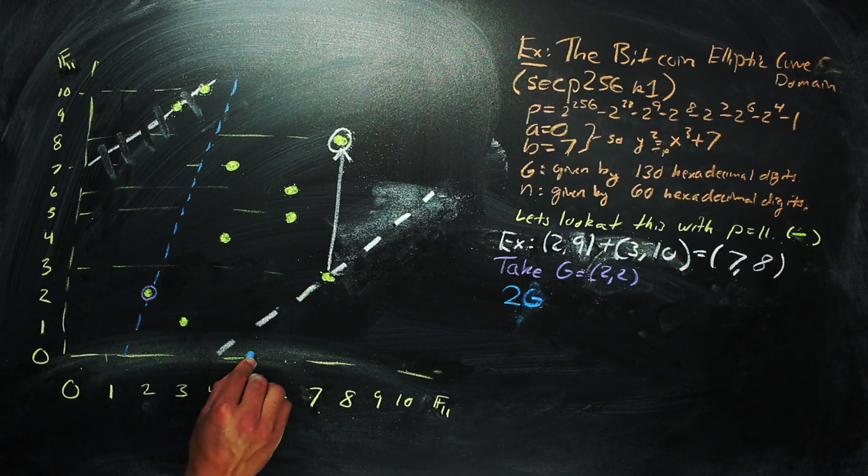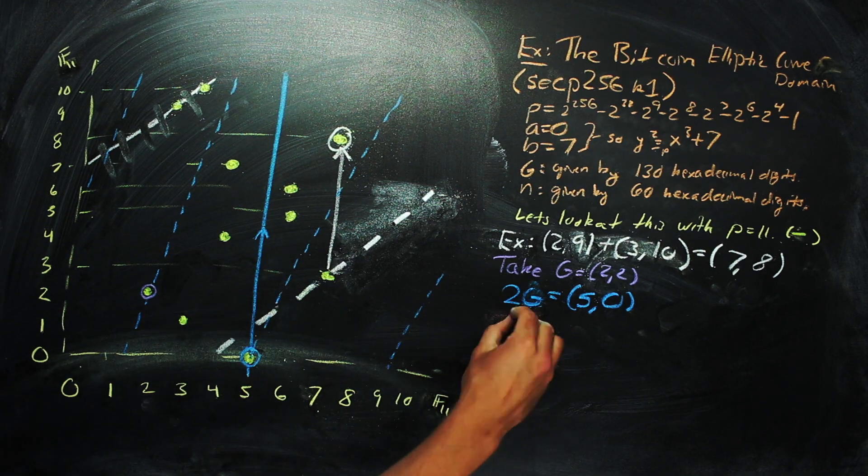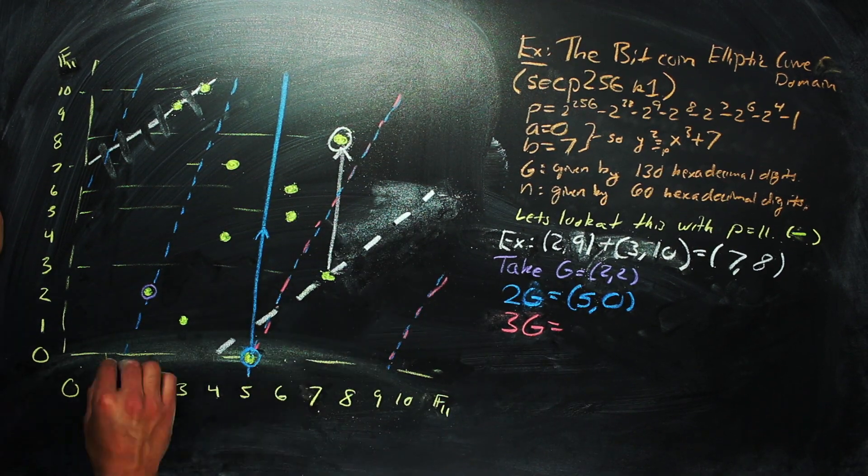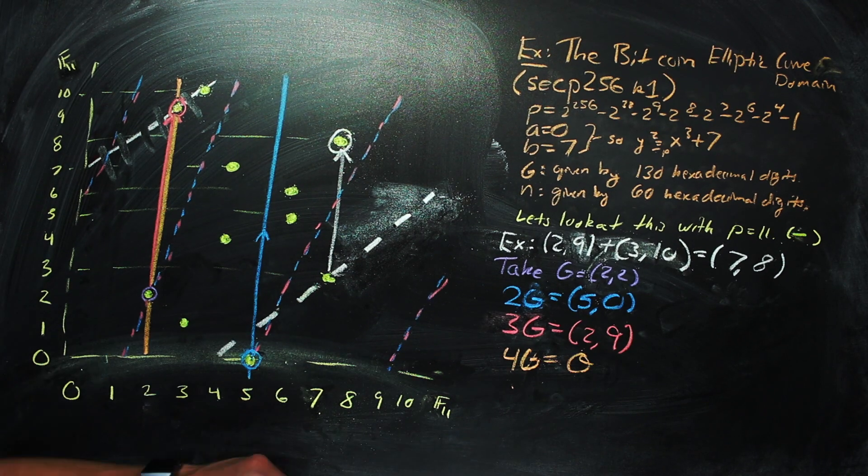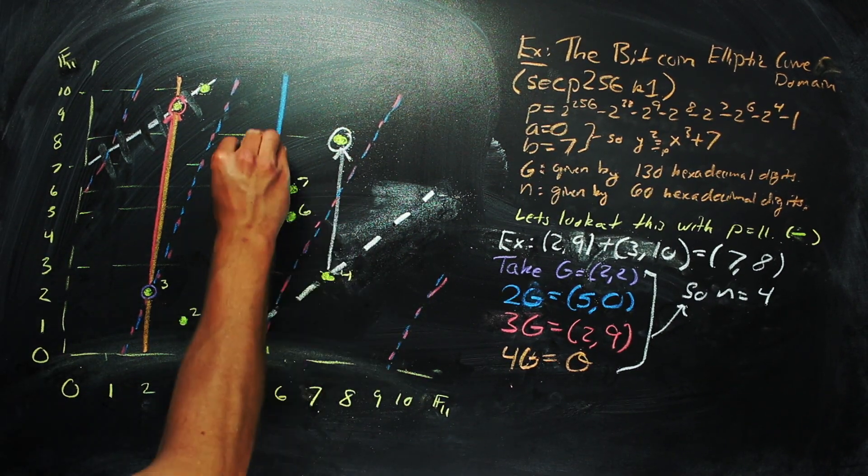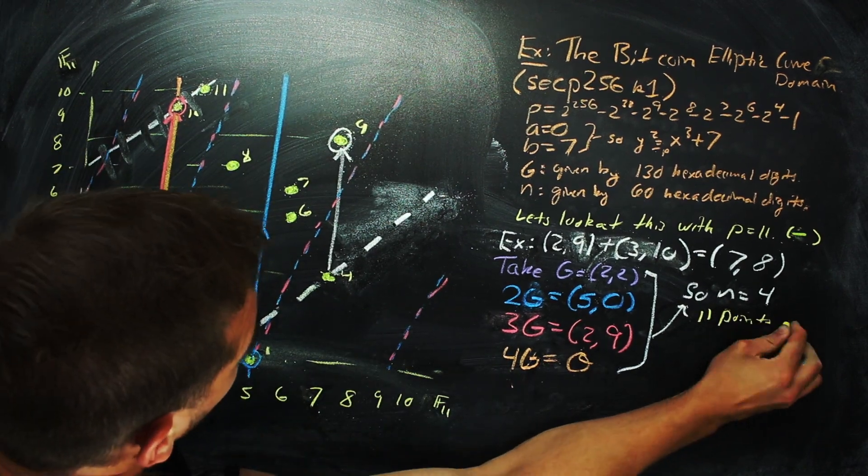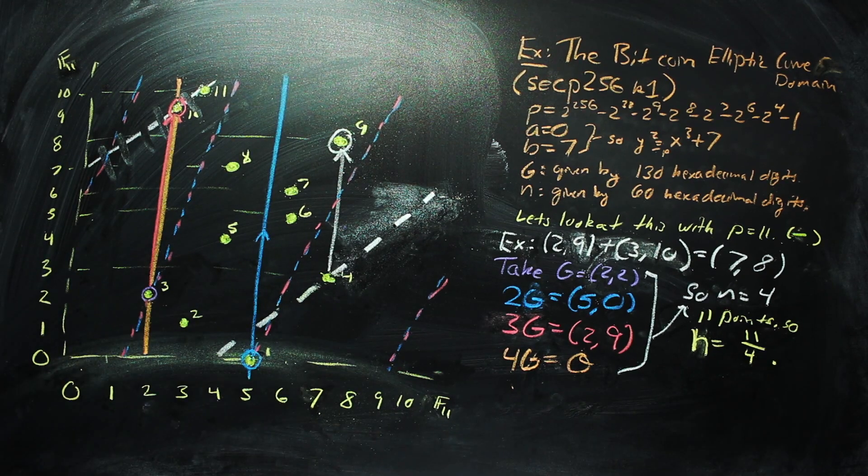It can be a bit harder to think about tangent lines in this new interpretation of our curve, but the calculation of a tangent line still makes sense. So adding 2, 2 to itself over and over again, we get the following multiples of 2, 2. And that gives us an n of 4. And since there are 11 points on the curve over f11, we have a cofactor h of 11 over 4. And that gives you the full description of the elliptic curve domain here.